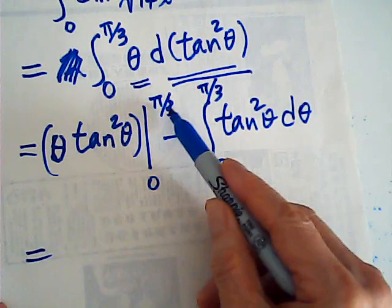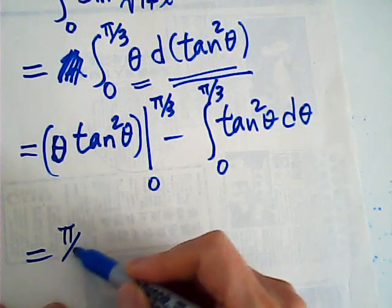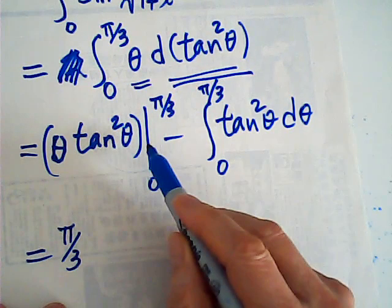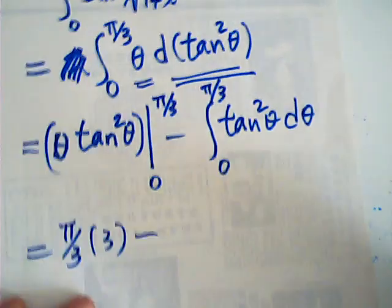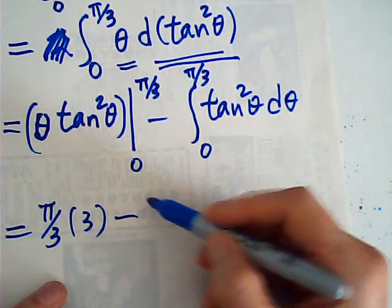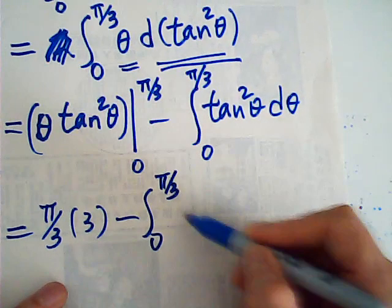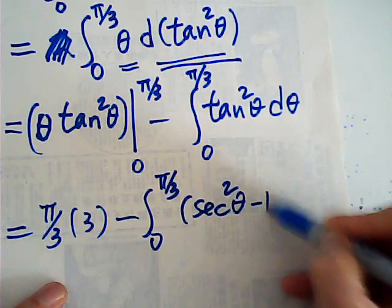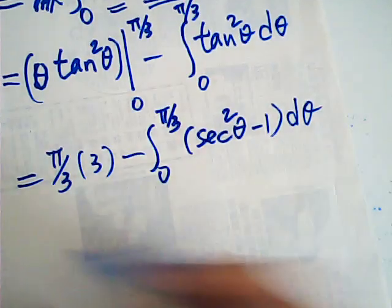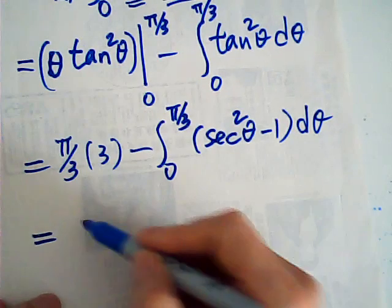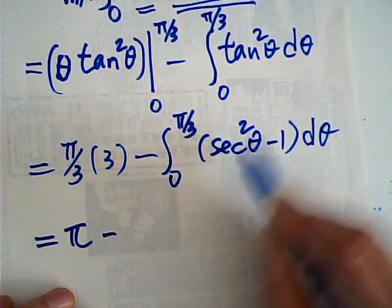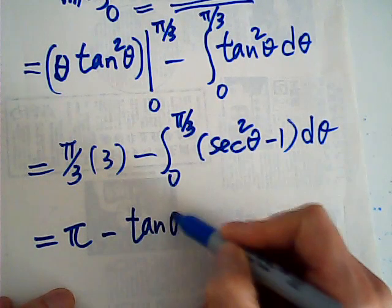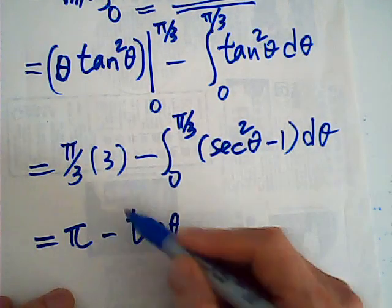When theta equals pi over 3, this is pi over 3 and tangent of pi over 3 is root 3, so tan² is 3. Minus 0. And tan² theta equals sec² theta minus 1, so the remaining integral becomes: integral of sec² theta minus integral of 1 d theta, which gives tangent theta minus theta.